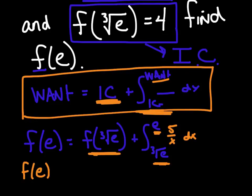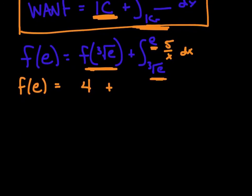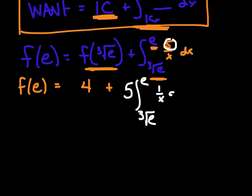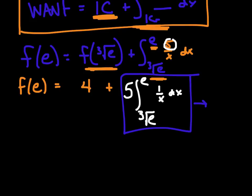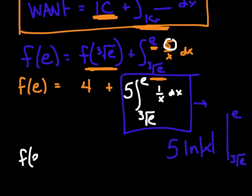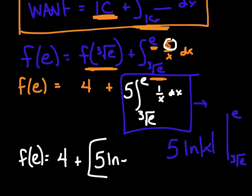We know f(∛e) = 4, and f prime is 5 over x. So f(e) = 4 plus the integral from ∛e to e of (5/x) dx. Pull out the 5: that's 4 plus 5 times the integral from ∛e to e of 1/x dx. The integral of 1/x is ln(x), so evaluate: 5[ln(x)] from ∛e to e = 5[ln(e) − ln(∛e)] = 5[ln(e) − ln(e^(1/3))].